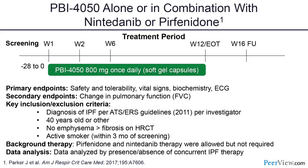The future of IPF is likely targeted combination therapy based on relevant biological pathways for individual patients. An example of industry designing a combination trial: PBI-4050 was tested alone or in combination with currently approved drugs — a small proof-of-concept study presented at ATS — highlighting that future therapeutic development will have to account for patients already on one of the two approved therapies.